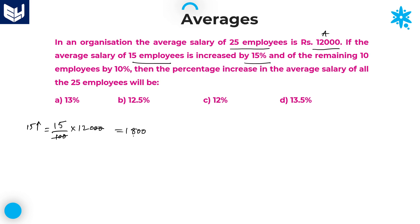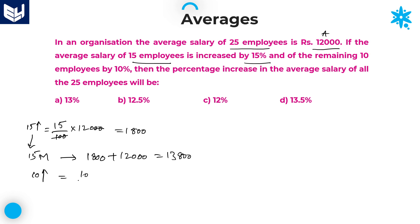The increment is 1,800, and the initial average salary is 12,000. Therefore, for these 15 members, their new salary is equal to increment 1,800 plus average salary 12,000, which is equal to 13,800. The remaining 10 members' increment is equal to 10 percentage of 12,000, which is 1,200. Therefore, those 10 members' salary is equal to 1,200 plus 12,000, which is equal to 13,200.